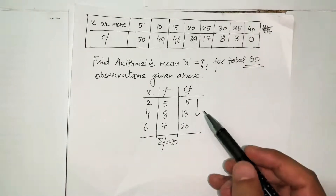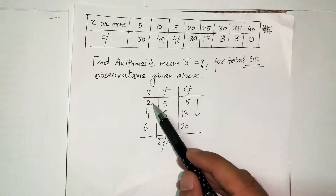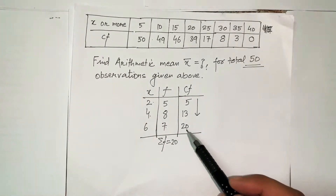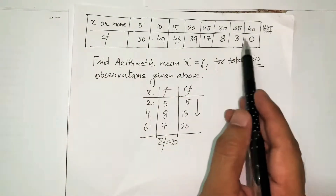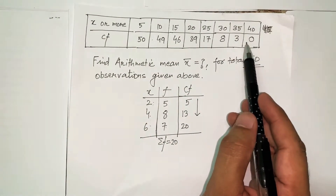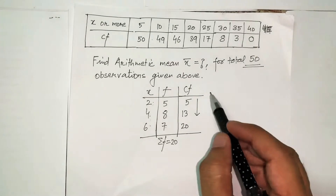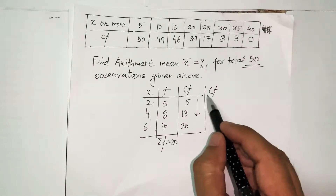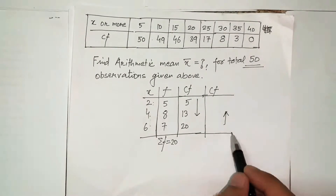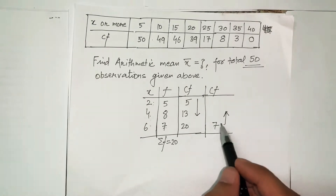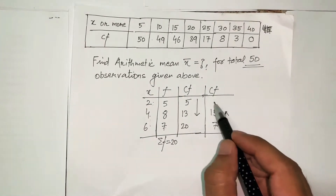Cumulative frequency means that 13 represents a number combining two categories of x (2 and 4), while 20 combines all three categories. Alternatively, frequencies can be accumulated from bottom to top. In that direction: the first frequency is 7, the second is 8 plus 7 = 15, and the last is 15 plus 5 = 20.